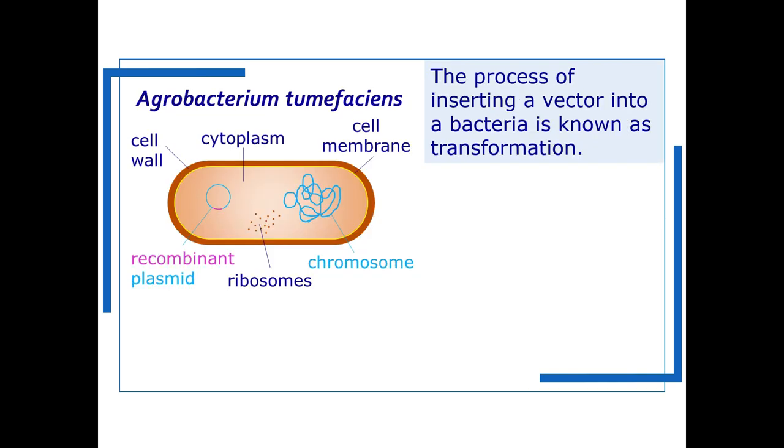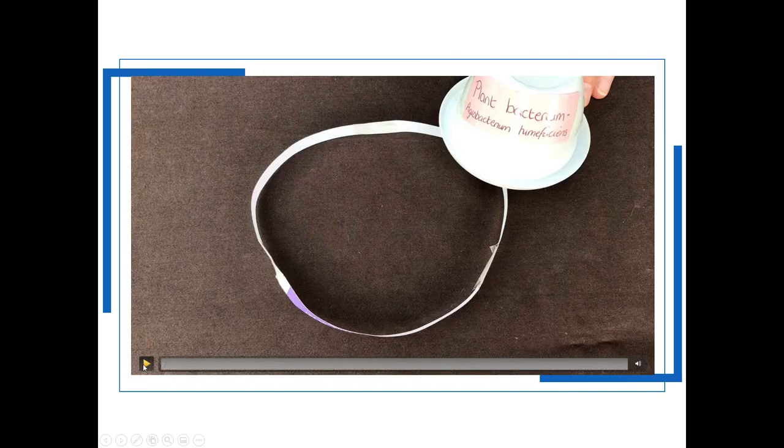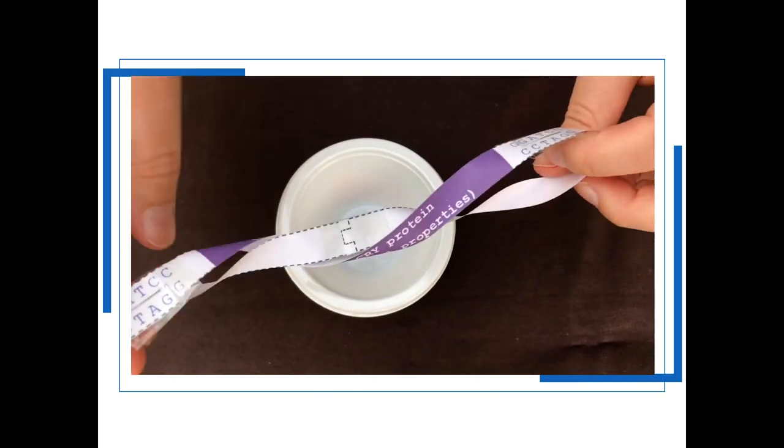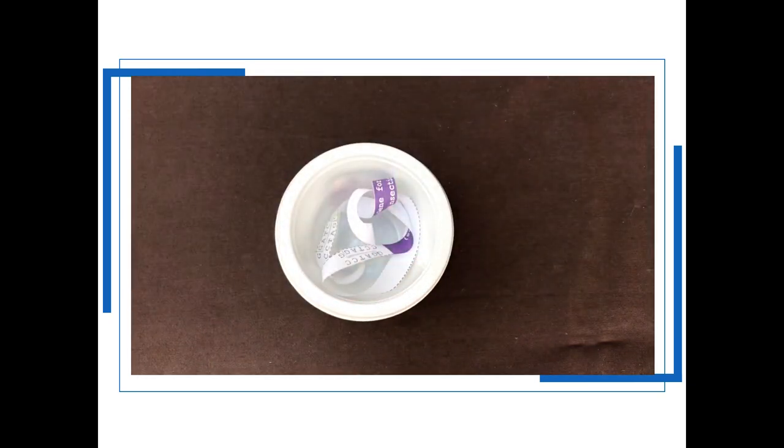The process of inserting a vector into a bacteria is known as transformation and in order to get the plasmid vector through the cell membrane it will need to be coiled for it to go through. So we can show this in the classroom using the yogurt pot plant bacteria and our model of the recombinant plasmid simply by twisting it up and putting it into the model plant bacteria.